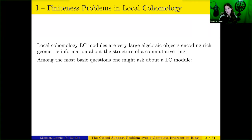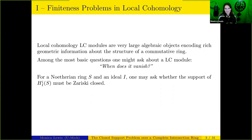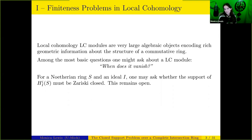Among the most basic questions you could ask about a given local cohomology module is when does it vanish? For a Noetherian ring S and an ideal I, one related question is: is the support of the module Zariski closed? Might it be possible in principle to find a finite list of defining equations for where this module lives and where it dies — to answer that kind of set-theoretic vanishing and non-vanishing question. This actually remains open. Even at the level of Noetherian rings, there is no known example where closed support fails. So this is a challenging open problem.